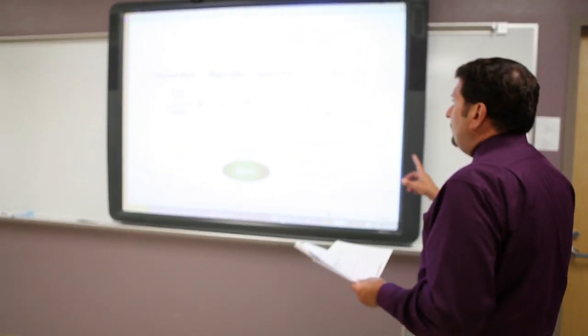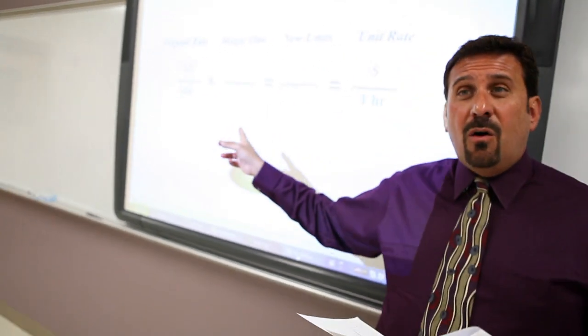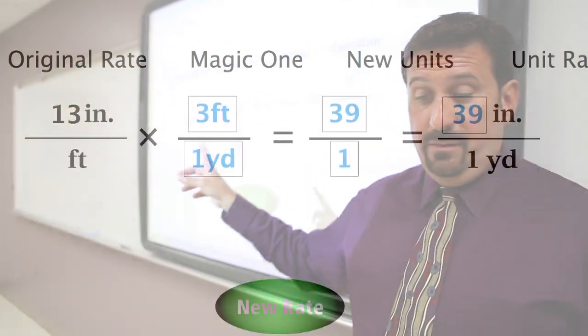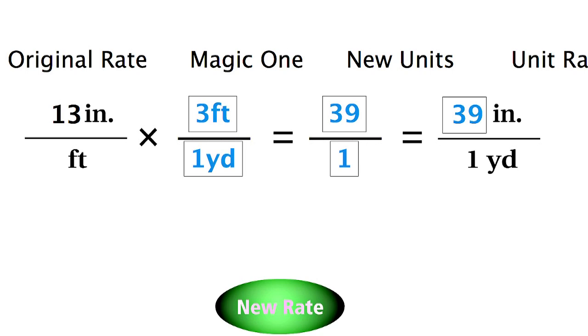That's exactly what you need to do. We can change any rate to another rate by using what we call unit analysis. We're going to work with what we call the magic one. Anything that you multiply by one equals itself — we know that from math. So we're going to use our conversion units, what we call the magic one.